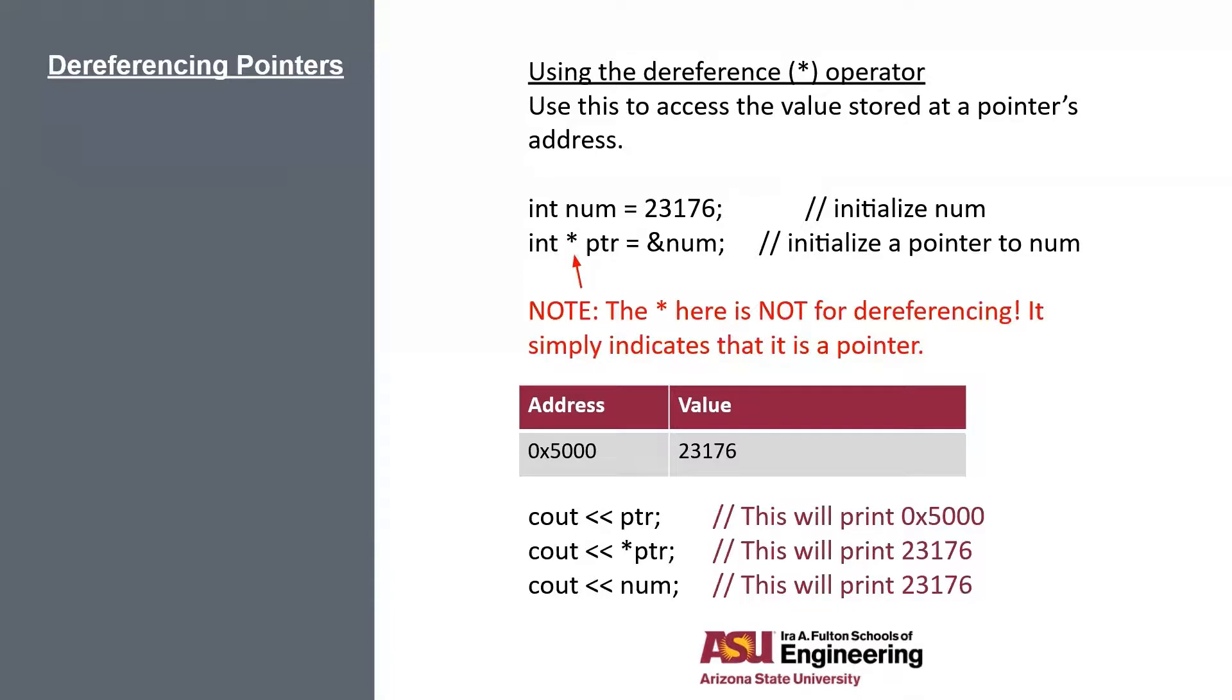Now, if we actually print pointer with the dereference operator, then we actually get the value that's at the address. To use the dereference operator, it's the same as the ampersand. You just put the star right before the pointer that you want to dereference. This is pretty much just telling it to go to the address that the pointer is holding, and then return the value.